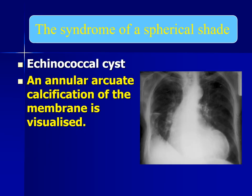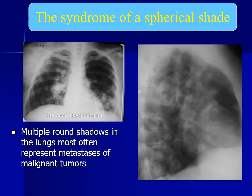An echinococcal cyst may also present with the syndrome of a spherical shade, appearing as an annular arcuate calcification of the membrane. Multiple round shadows in the lungs most often represent metastases of malignant tumours.